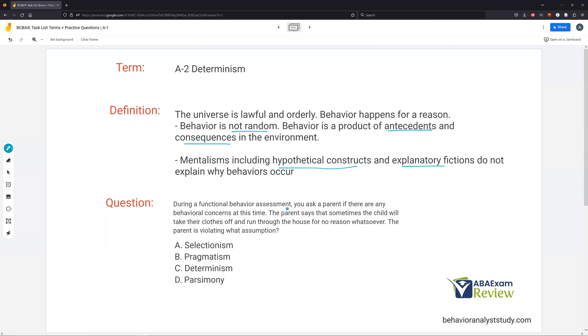Question, during a functional behavior assessment, you ask a parent if there are any behavioral concerns at this time. The parent says that sometimes a child will take their clothes off and run through the house for no reason whatsoever. The parent is violating what assumption? Again, happens constantly when you're a behavior analyst doing assessments. They just scream for no reason. They run through the house naked for no reason. You can't accept that. So the parent is violating what assumption when they say this? Well, it's not selectionism. We're going to talk about pragmatism and parsimony. What we're discussing here is determinism. When we say something happens for no reason, we're ignoring the fact that the universe is lawful and orderly.